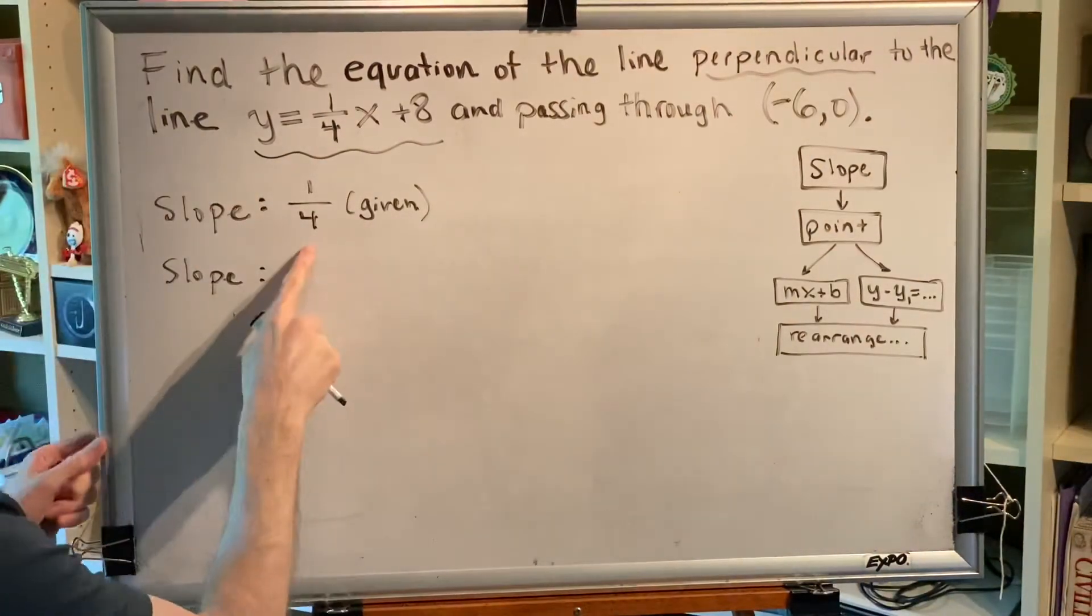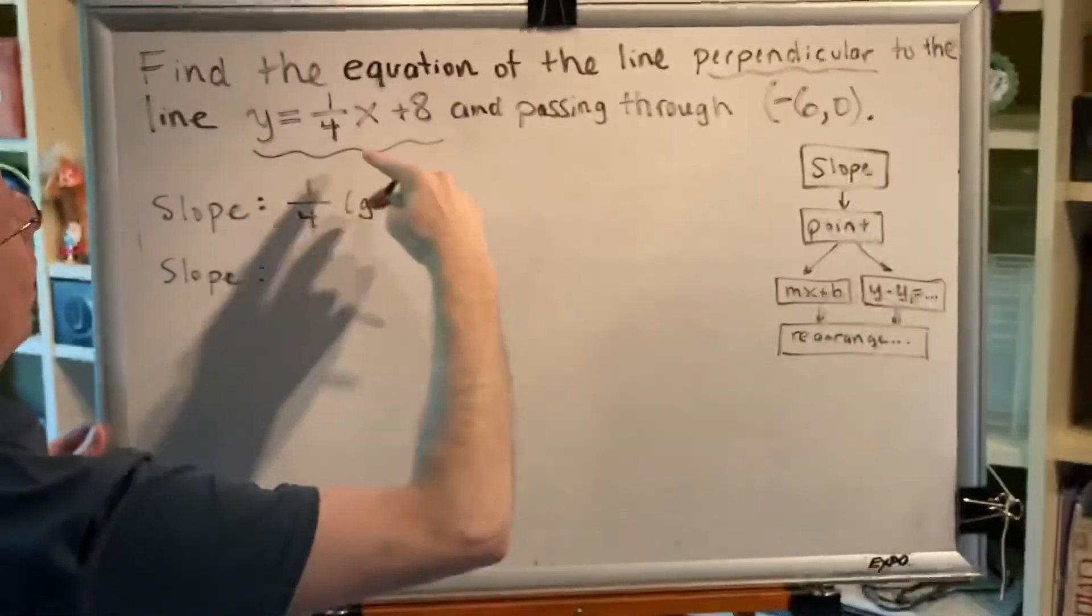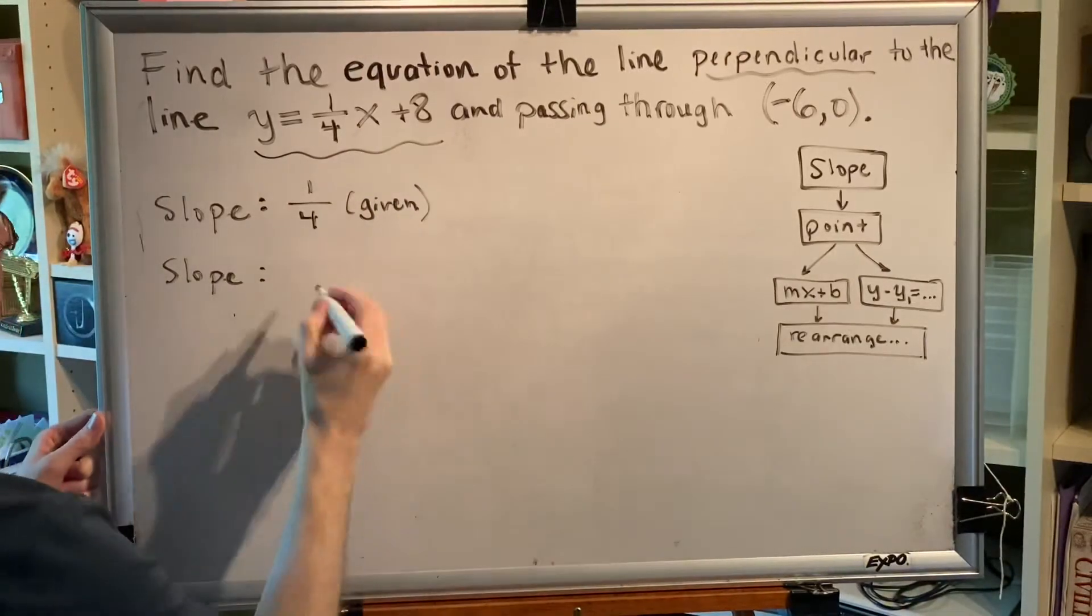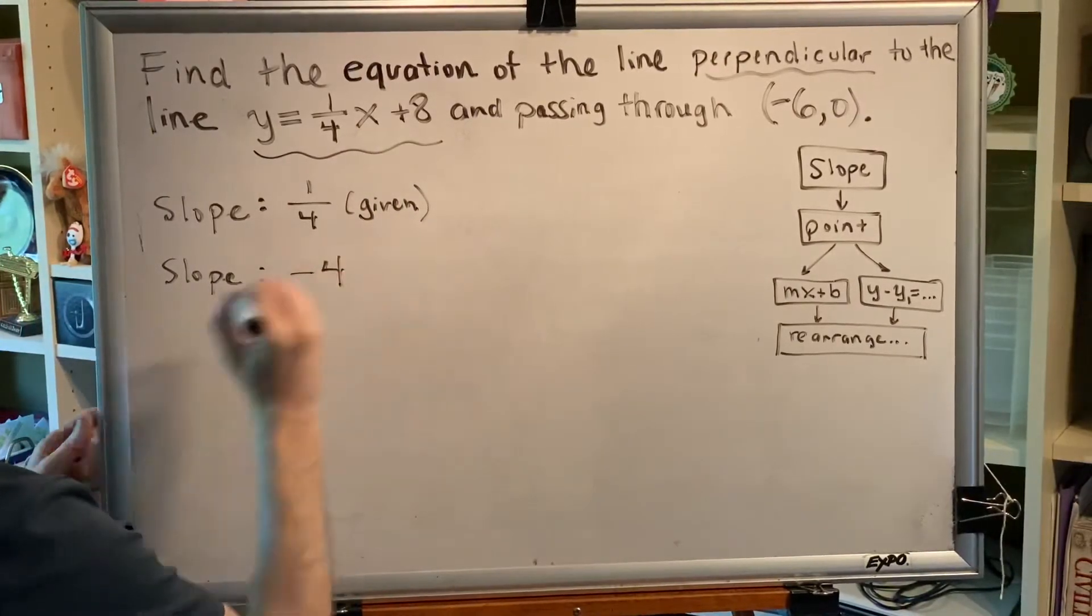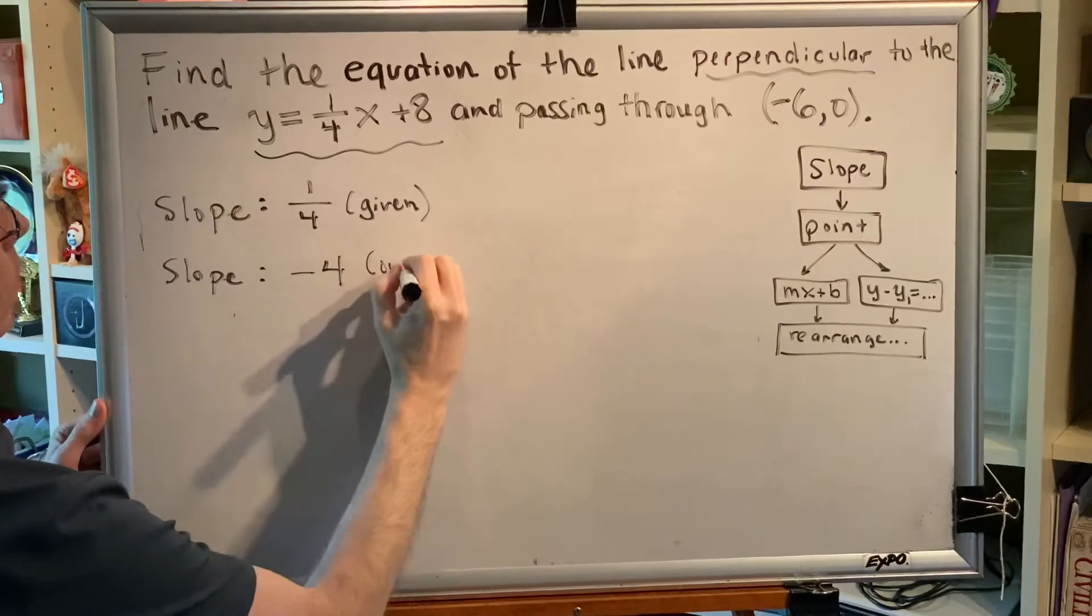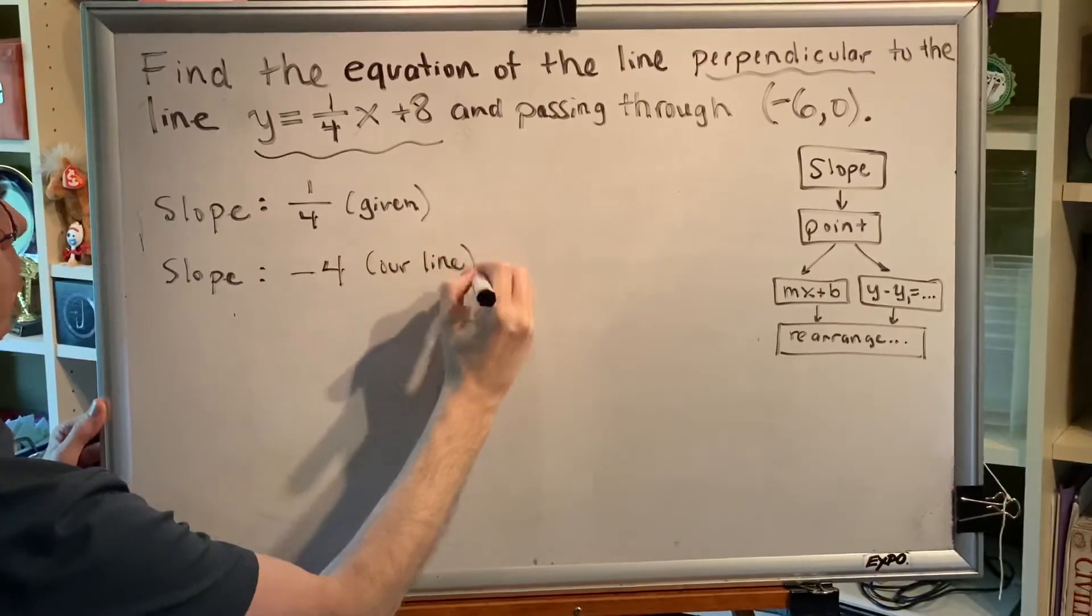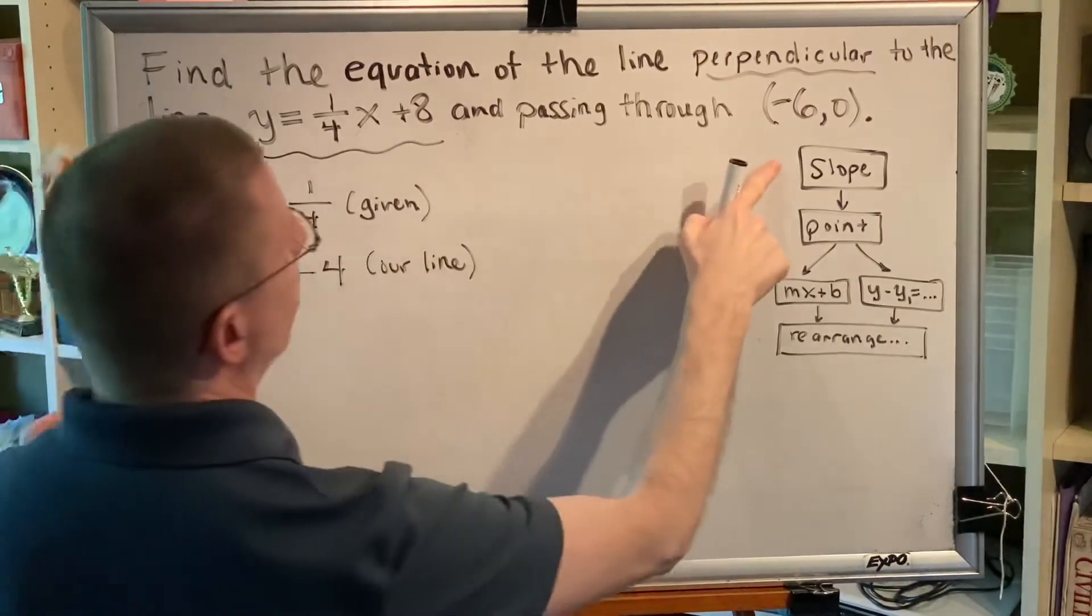So I need to flip it over and change the sign. 1 over 4 becomes 4 over 1, which is 4. Change the sign, make it negative, negative 4. We now have the slope of our line. Okay, slope done.